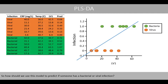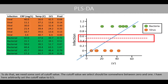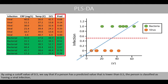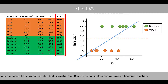So, how should we use this model to predict if someone has a bacterial or viral infection? To do that, we need some sort of cut-off value. The cut-off value we select should be somewhere between 0 and 1. Here I arbitrarily set the cut-off value to 0.5. By using a cut-off value of 0.5, we say that if a person has a predicted value lower than 0.5, the person is classified as having a viral infection, and if a person has a predicted value greater than 0.5, the person is classified as having a bacterial infection.